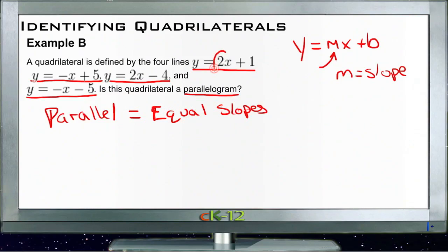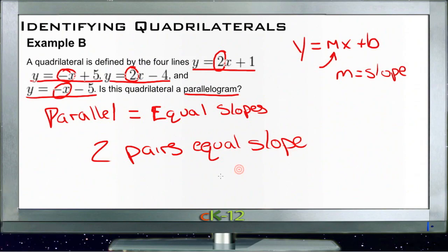Well, our first line has a slope of 2, and our third line has a slope of 2, so there's one pair. And then our second line has a slope of negative 1, and our fourth line has a slope of negative 1. So yeah, we do have two pairs of equal slopes. So we have a parallelogram.